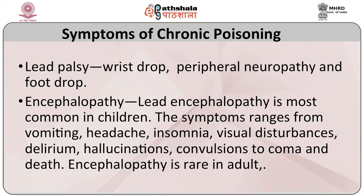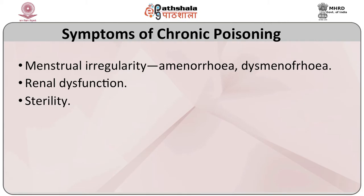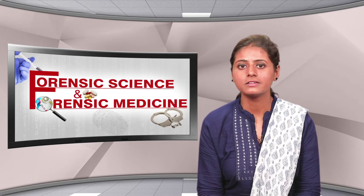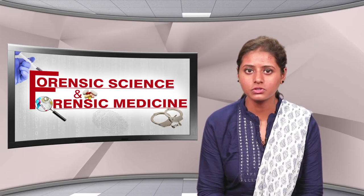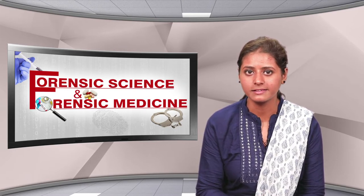Encephalopathy is rare in adults. Other symptoms include menstrual irregularity, amenorrhea, dysmenorrhea, renal dysfunction, and sterility.